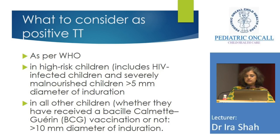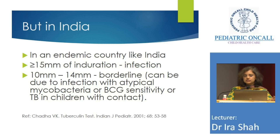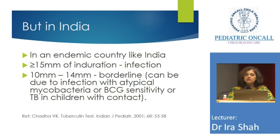What do you consider a positive MANTU? As per WHO: malnourished children or immunocompromised patients — anything more than 5 mm. Patients who have or haven't received BCG but with normal immunity — more than 10 mm. Very clear and simple. But in an endemic area, one paper by Chadda et al. said 10 can be borderline, and that an induration of more than 15 mm more likely indicates infection, while induration between 10 and 14 mm could be atypical mycobacteria, BCG, or just TB contact. An induration between 10 and 14 mm needs clinical correlation to make a diagnosis.